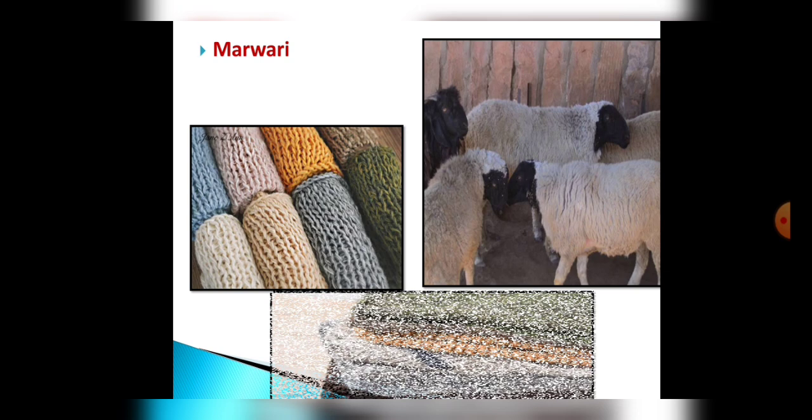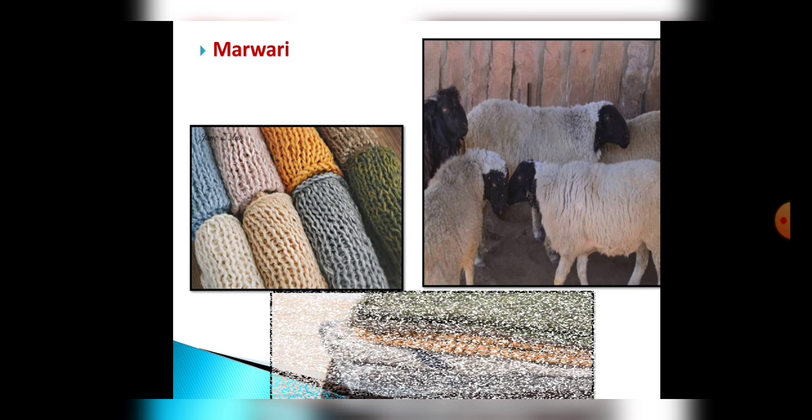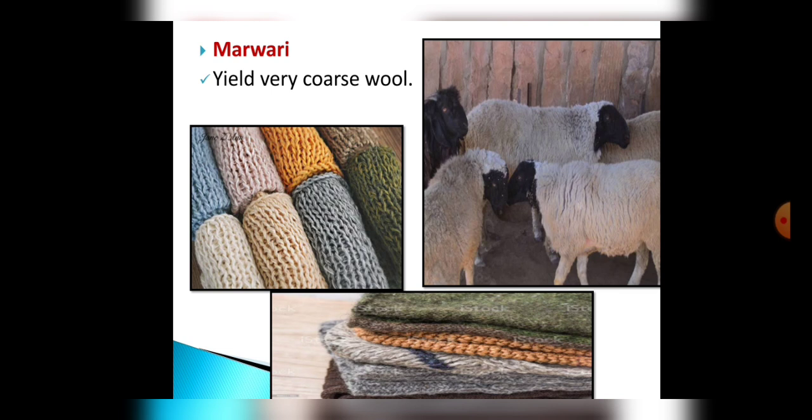The next breed is Marwadi. These two pictures you can see on your screen showing the coarse wool fabric which we get from the Marwadi breed, and it is found in Gujarat.